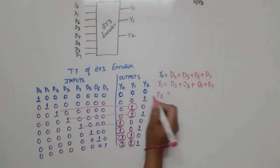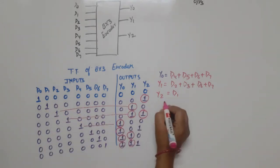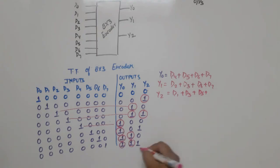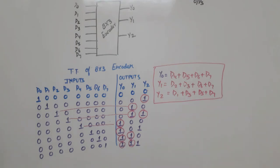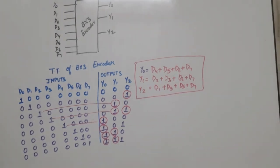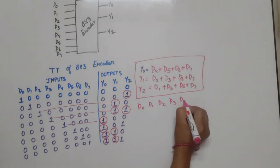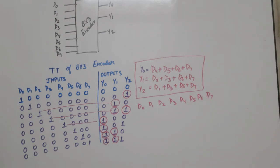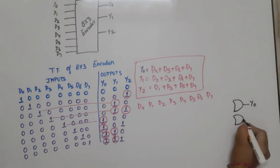Now, for Y2, the expression is D1 plus D3 plus D5 plus D7. These are the inputs — 8 total. The outputs are 3: Y0, Y1, and Y2.